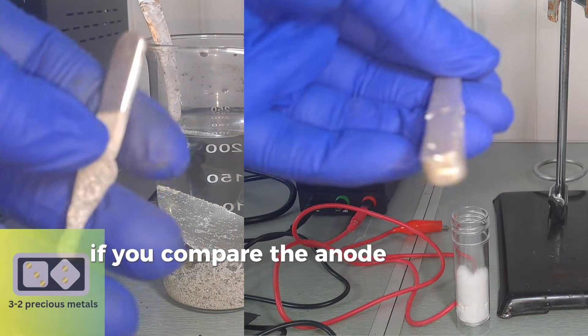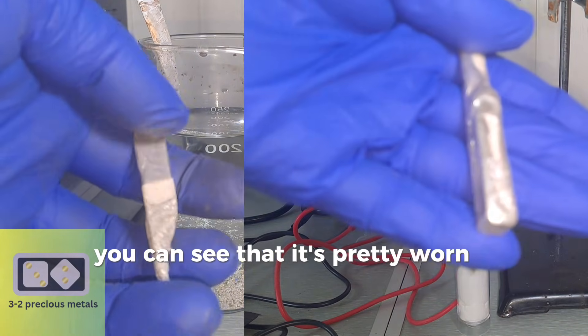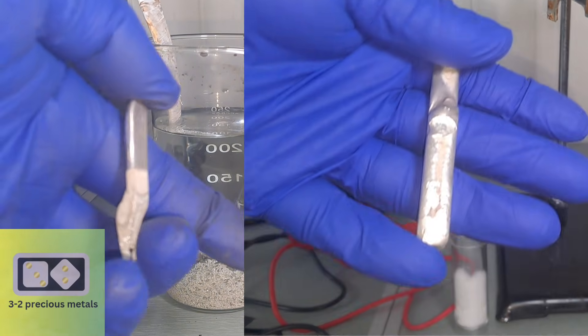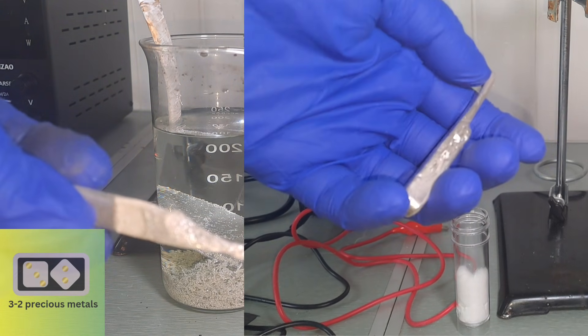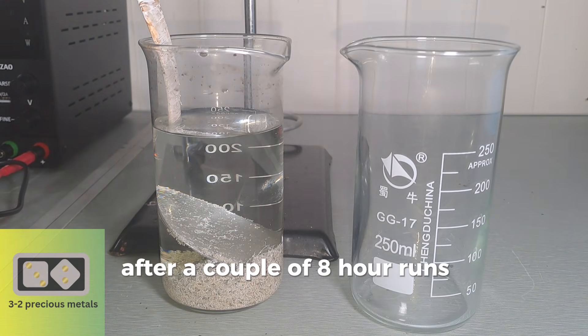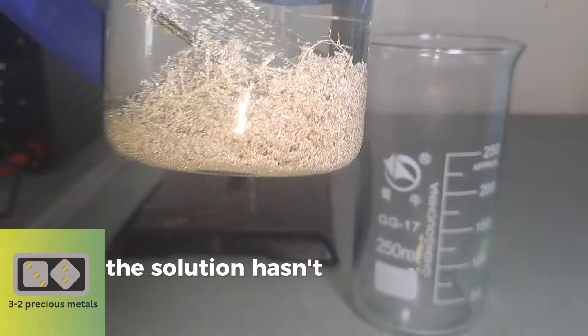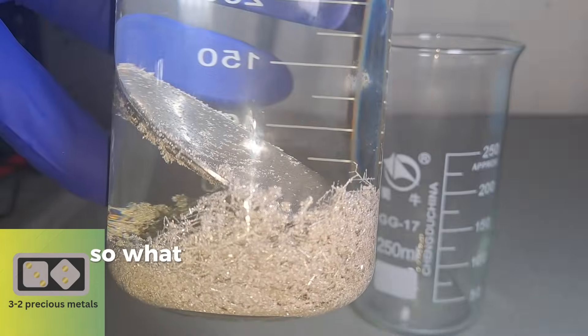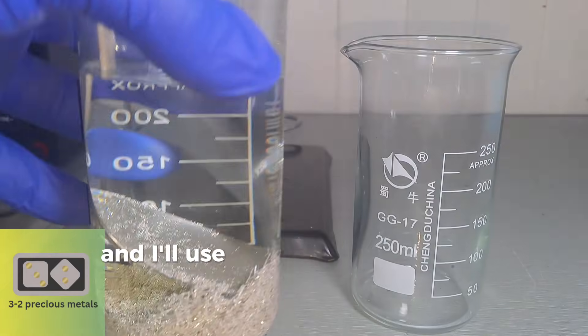If you compare the anode now to the anode when I started, you can see that it's pretty worn down. After a couple of runs, I've collected a good amount of crystals. The solution hasn't turned blue, so what I'll do is set it aside while I rinse off the crystals, and I'll use it to show you what happens if the anode is highly contaminated with copper.